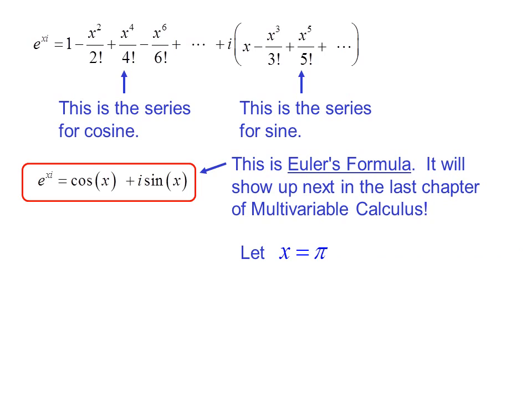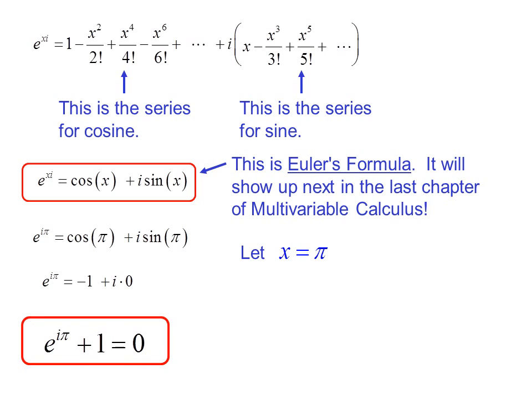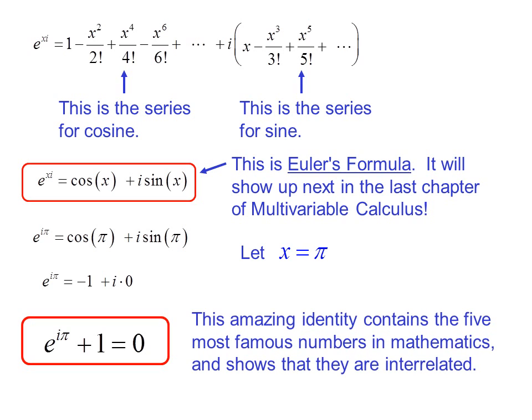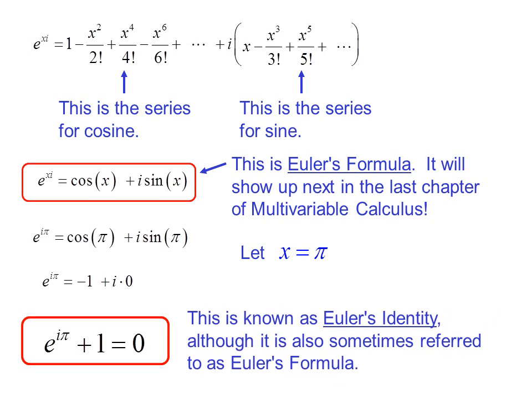If we let x = π, we have e^(iπ) = cos(π) + i·sin(π). But cos(π) = -1 and sin(π) = 0, so e^(iπ) = -1 + 0. Adding 1 to both sides gives e^(iπ) + 1 = 0. This amazing identity contains the 5 most famous numbers in mathematics and shows that they are interrelated. This is known as Euler's identity.